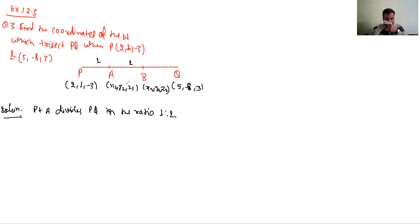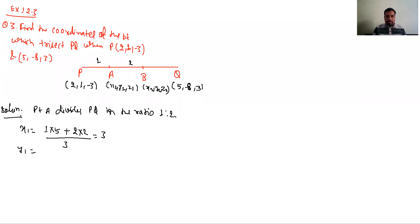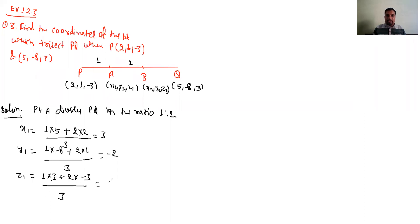Sabse pehle A ke coordinates nikaalenge using internal division formula. x1 = (1×5 + 2×2)/3 = (5+4)/3 = 9/3 = 3. y1 = (1×(-8) + 2×1)/3 = (-8+2)/3 = -6/3 = -2. z1 = (1×3 + 2×(-3))/3 = (3-6)/3 = -3/3 = -1. To A ka coordinate ho gaya (3, -2, -1).